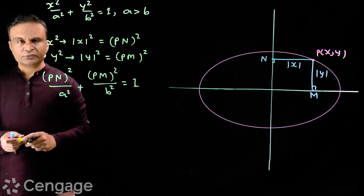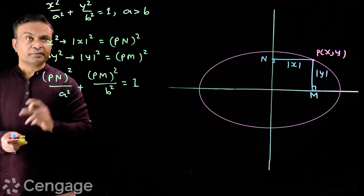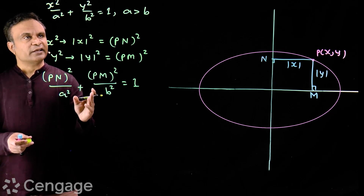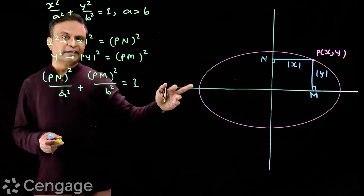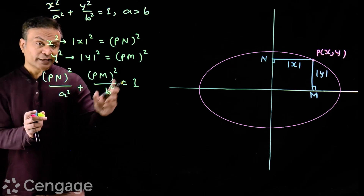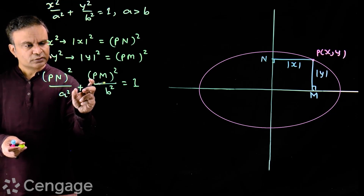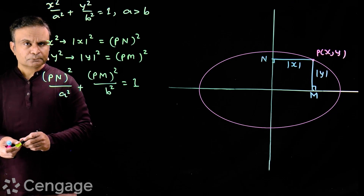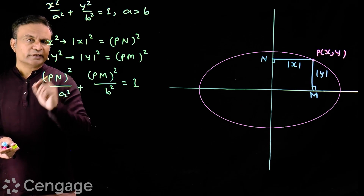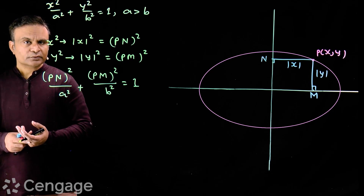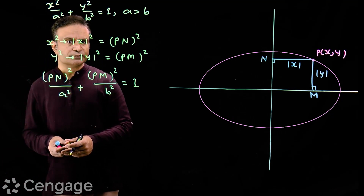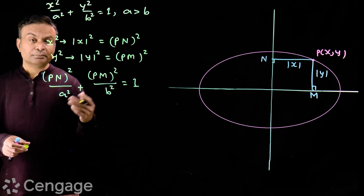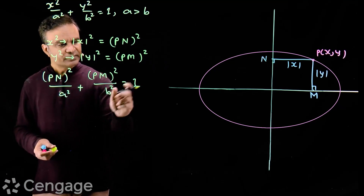So here we have given a new look to this standard equation of ellipse. x is the distance of the ellipse's variable point from the minor axis, and y tells us the distance of variable point P from the major axis. Reading this equation from its structural point of view: it is the square of the distance of variable point P from the minor axis divided by the square of the length of the major axis, plus the square of the distance of P from the major axis divided by the square of the length of the minor axis, and this sum equals 1.